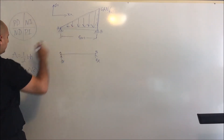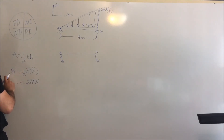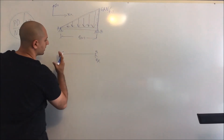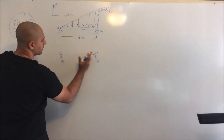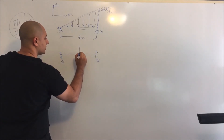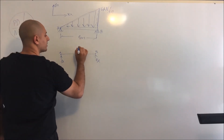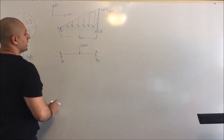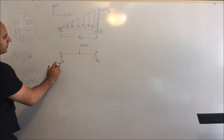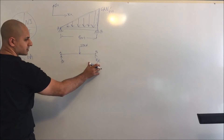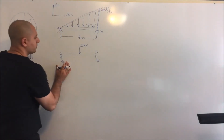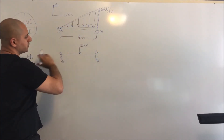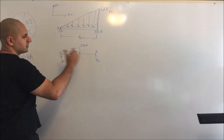Our resultant force is 27 kilonewtons. I know I have a resultant force somewhere in here — I'll call it F_r, which is 27 kilonewtons. Now I can proceed to the next step and solve for the reaction forces. We'll start with the summation of forces in the y-direction.